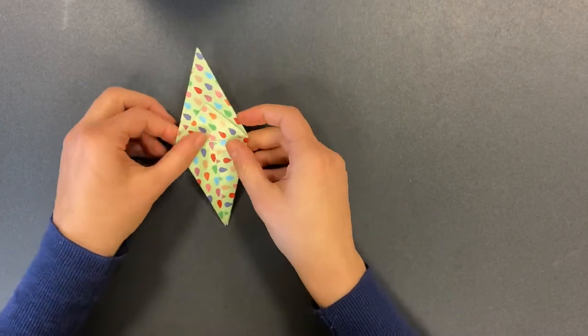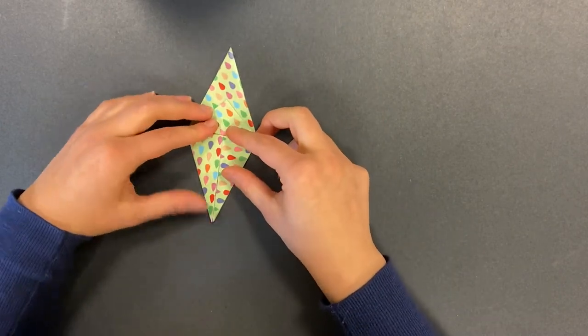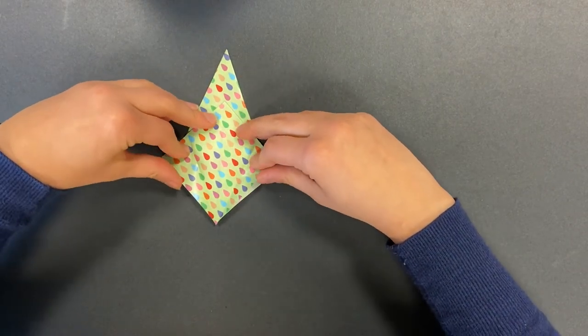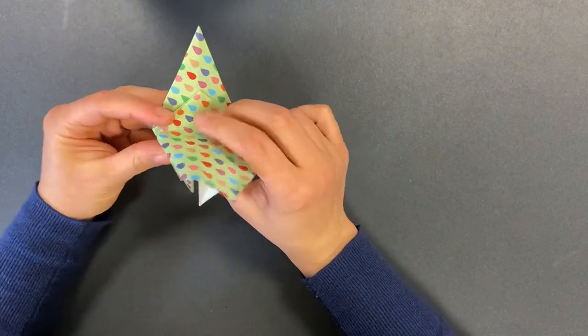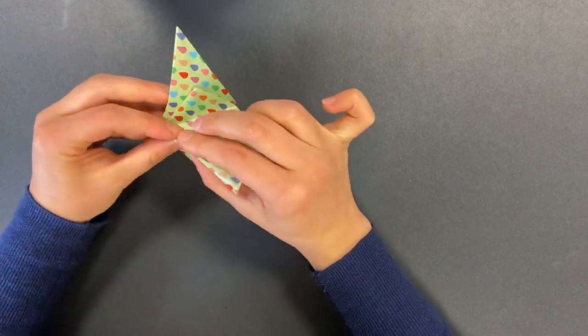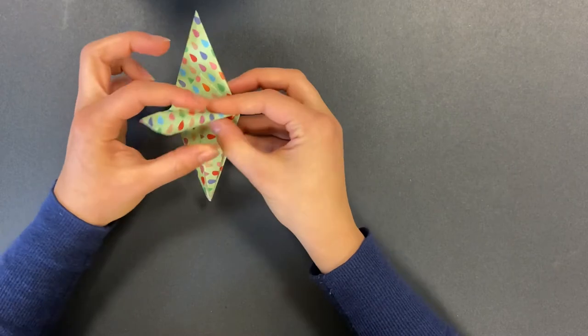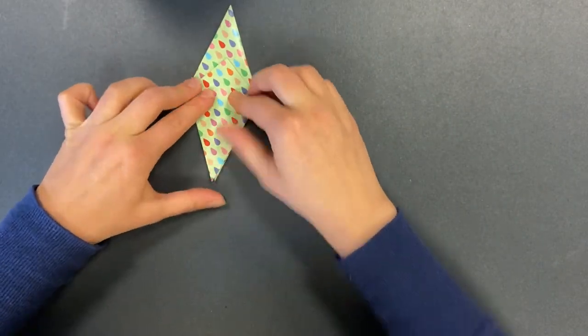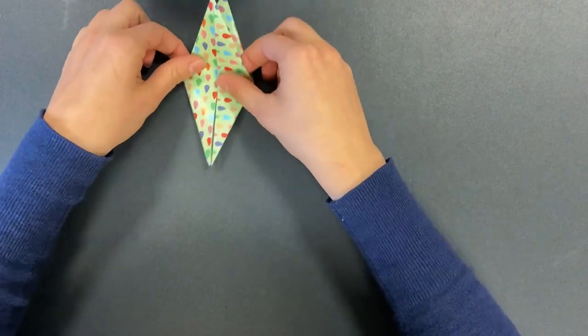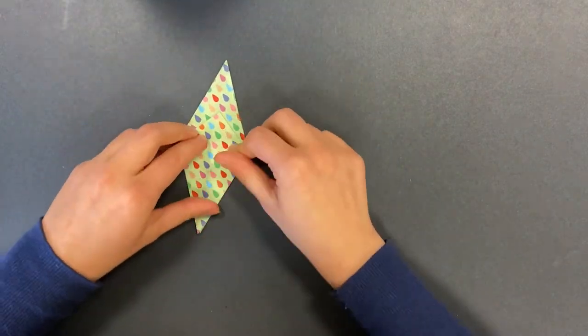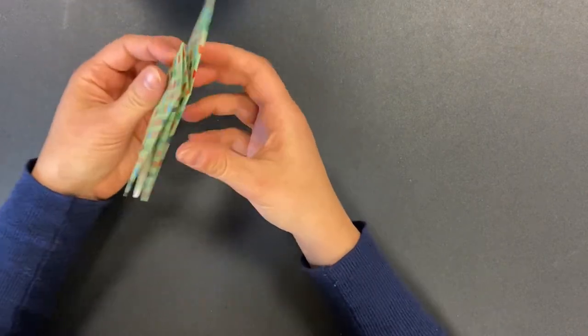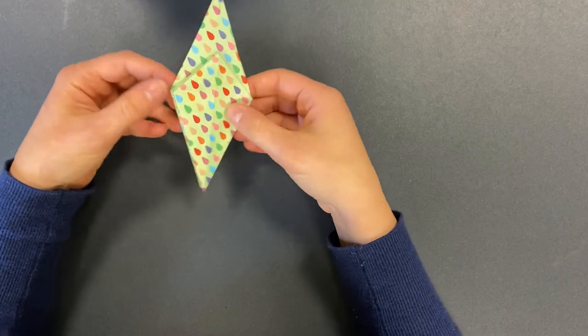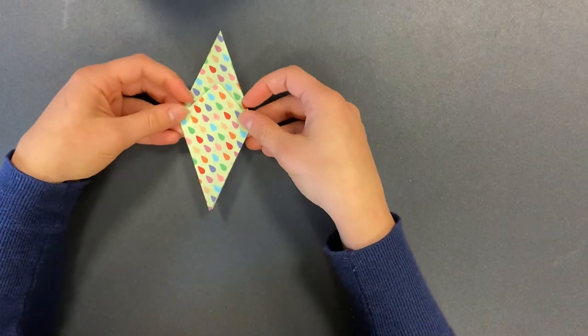Now you're going to flip the paper over and do the same thing on this side. Open the curtains. Flip the paper open. But this time, instead of opening it all the way up, you're going to fold it back down. So rather than opening it up, you're going to fold it back down. Okay. So you should have something that looks like this, open on one side and closed on the other.